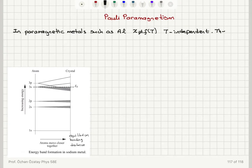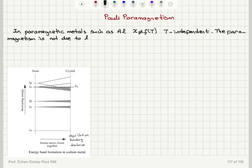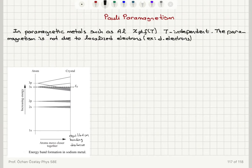The paramagnetism is not due to localized electrons — it is not due to localized d-electrons, for example. So these are delocalized. What do we mean by delocalized? We need to talk about energy bands.